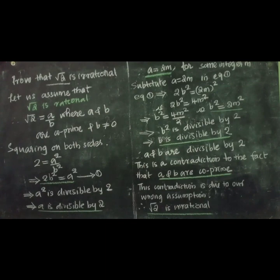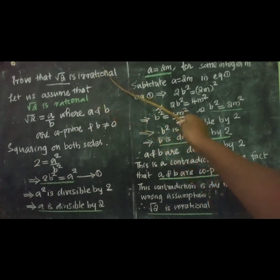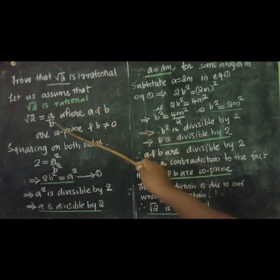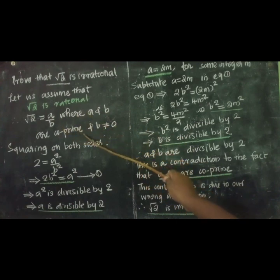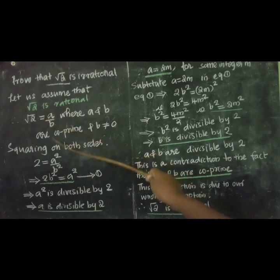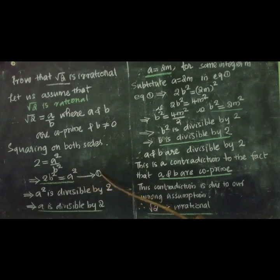Now we are going to prove that root 2 is irrational. For this proof, we are applying the contradiction method — we are assuming the contradiction. Let us assume that root 2 is rational. If root 2 is a rational number, we can write root 2 equal to a by b, where a and b are coprime and b not equal to 0. Coprime means there is no common factor for a and b other than 1. Now squaring on both sides: we get 2 equal to a squared by b squared. Taking b squared to the left side, we get 2b squared equal to a squared. Keep it as equation number 1.